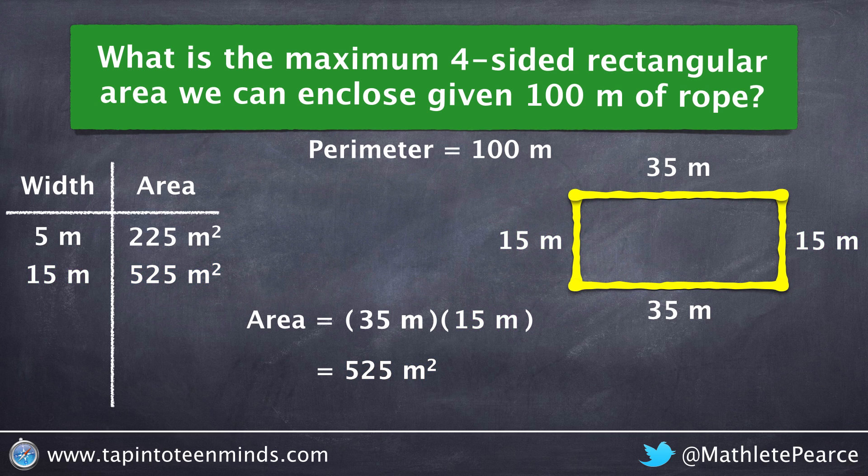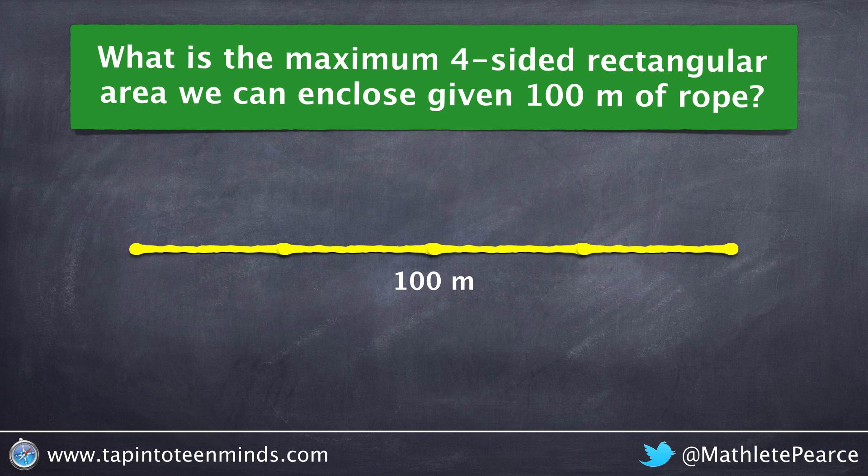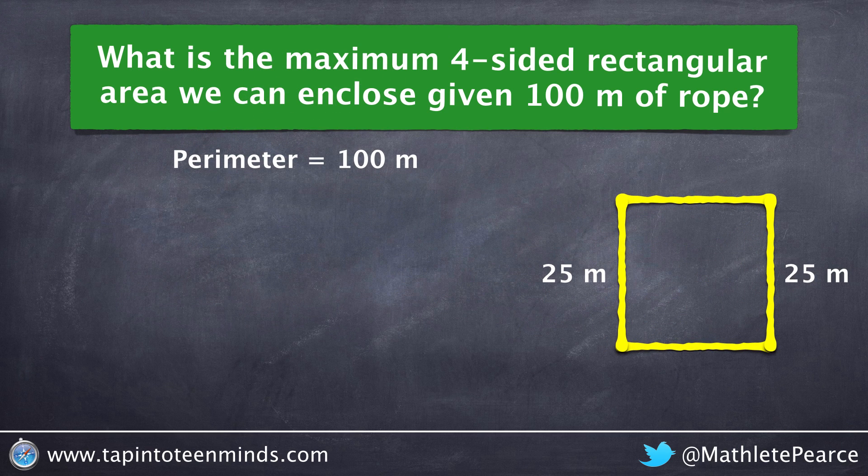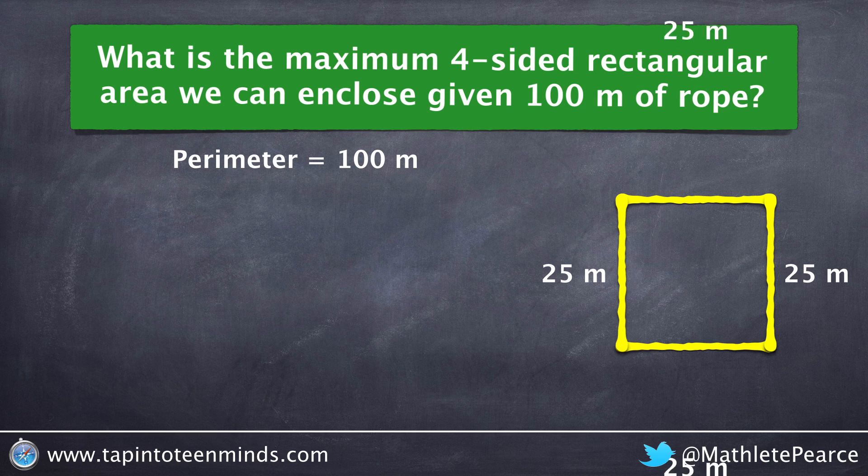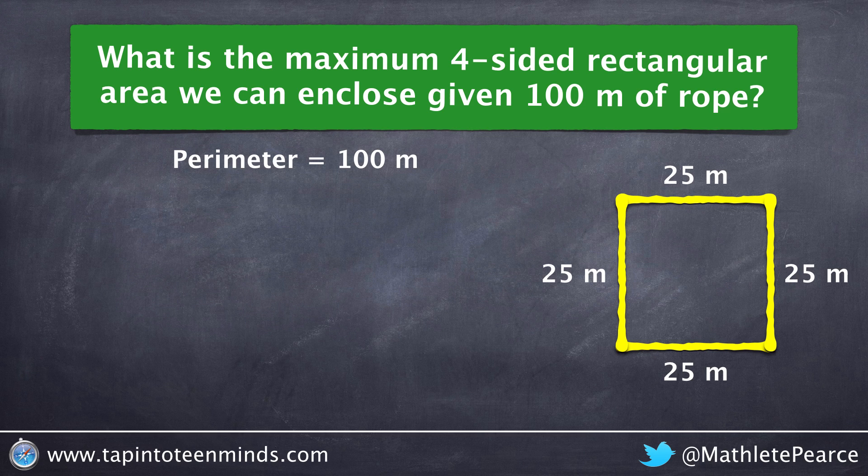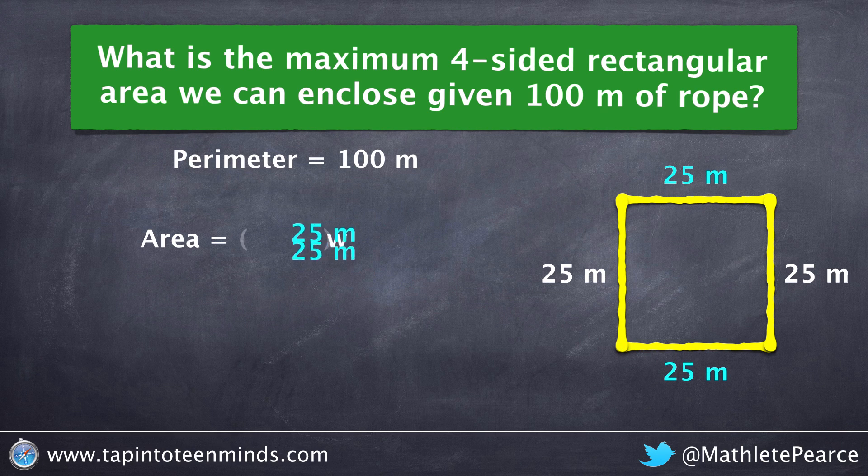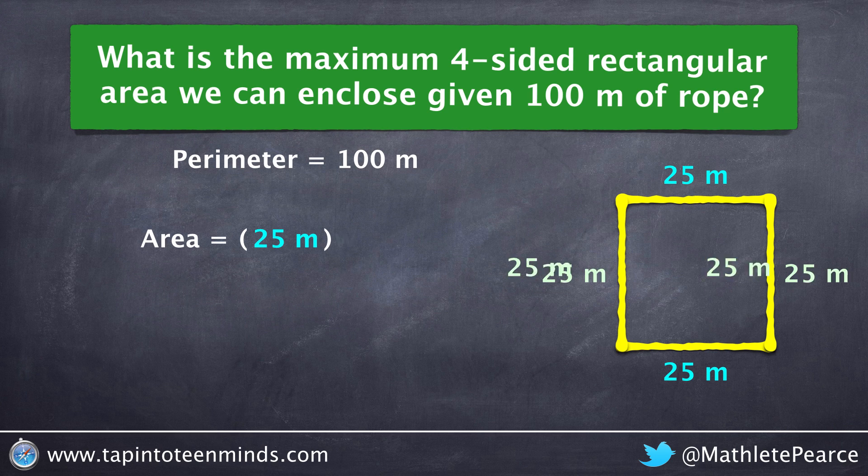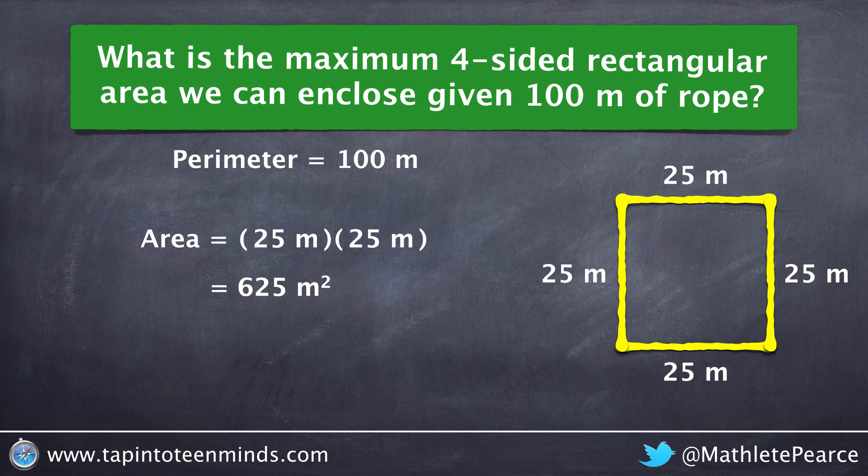Investigating further, we could increase our width to 25 meters, for example, which would yield a square. We would have two widths of 25 and two lengths of 25 to use the entire 100 meters of rope. Calculating the area of this special rectangle, or square, we would multiply the length of 25 meters by the width of 25 meters, for a total area of 625 meters squared.